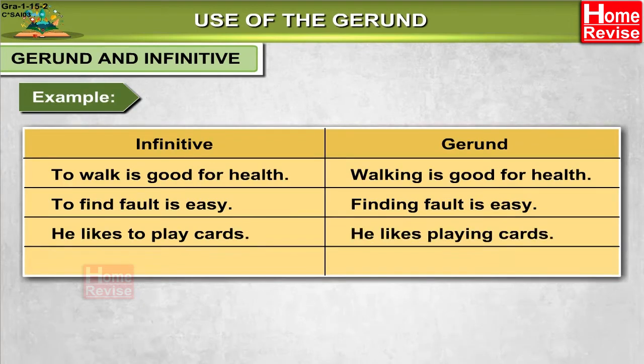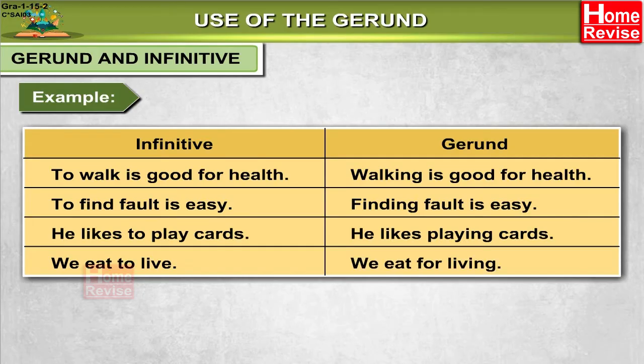Infinitive — 'We eat to live.' Gerund — 'We eat for living.'